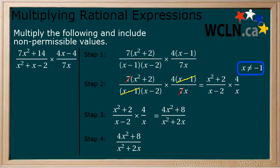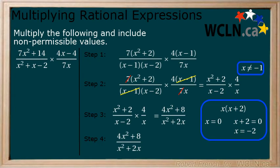This is the expression where we determine any remaining non-permissible values. Our denominator factors to x multiplied by x plus 2. Make each factor equal to 0 and solve. We have x cannot equal 0, negative 2, and negative 1.